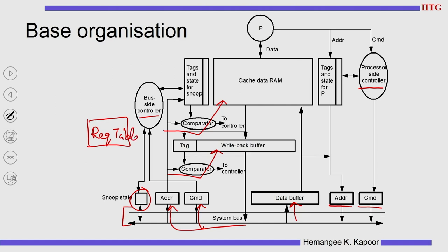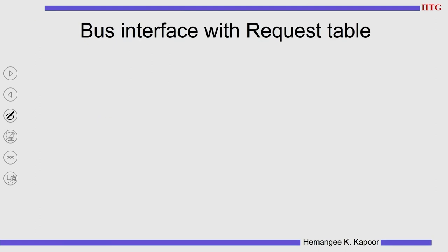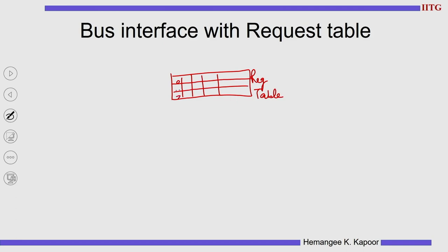Inside this design, we have to integrate the request table. The request table will come here. Apart from this, the system bus — which was one bundle of wires — is now two or three bundles of wire because we have split it into data bus and address bus. Accordingly, we have to add more buffers to keep track of what is happening. We will now try to make an overall picture and then give you the detailed design. We have the request table which has all these entries: seven rows, row number 0 to row number 7. Inside this, the tag, then the address and other entries.